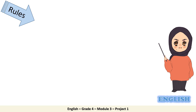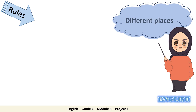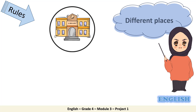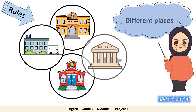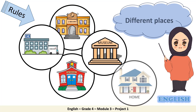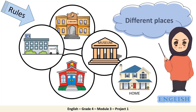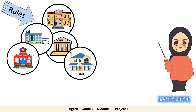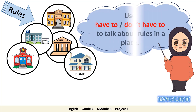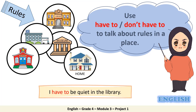Now, when we give rules, we give rules in different places — such as library, hospital, school, museum, and home. If you want to give rules in a certain place, you need to follow the following: use 'have to' or 'don't have to' to talk about the rules in that place. Look at the example: I have to be quiet in the library.